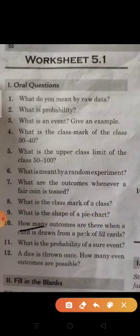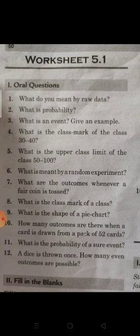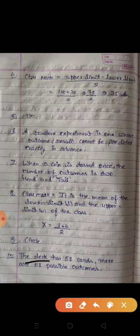Question number 10: how many outcomes are there when a card is drawn from a pack of 52 cards? The deck has 52 cards, there are 52 possible outcomes.